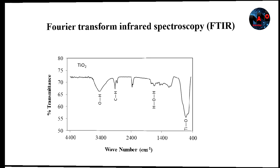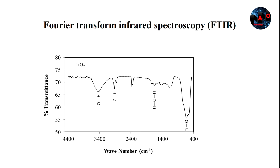In this figure, you can see the FDIR spectrum of titanium dioxide nanoparticles. The transmission spectra were measured in the range of 4,400 to 450 per centimeter with a resolution of 2 per centimeter.